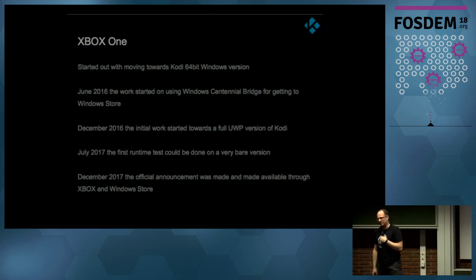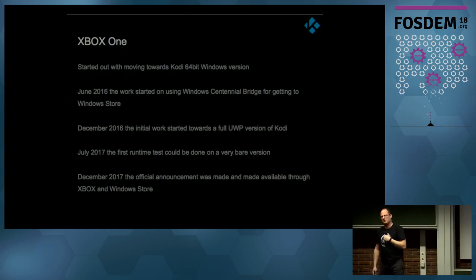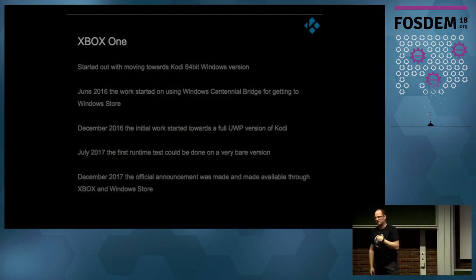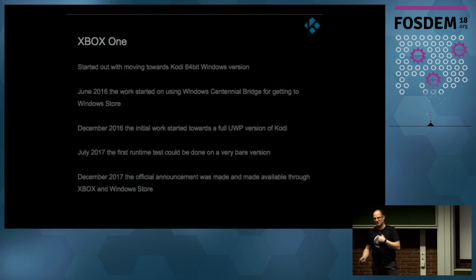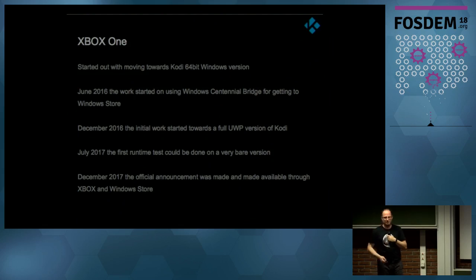We started moving to 64-bit Windows. In June 2016 the work started for the Centennial Bridge — it took about a month to get ready. In December 2016, the initial work started for UWP. By July we were first running it, and in December we launched to the store as a working version. Not everything works yet because UWP has limitations, and Microsoft needs to fix 4K playback of 10-bit files crashing the Xbox.